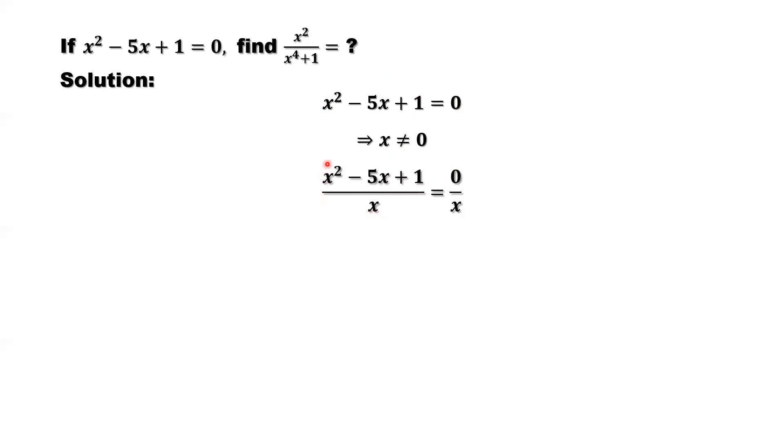So left-hand side x squared divided by x is x, negative 5x divided by x is negative 5, 1 over x is 1 over x, and 0 divided by x is 0. So here we can simplify this, move negative 5 to the right-hand side. We are here.